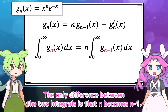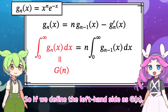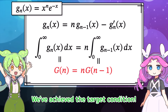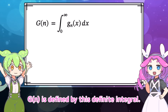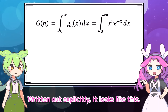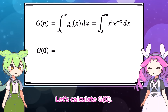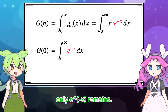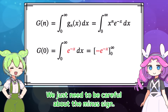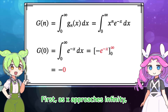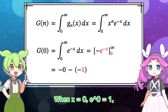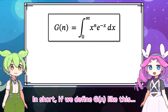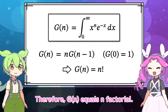Let's integrate both sides from 0 to infinity. The extra term disappears. The only difference between the two integrals is that n becomes n minus 1. So if we define the left-hand side as g of n, then the right-hand side can be written as n times g of n minus 1 — we've achieved the target condition. At last, we've constructed the function g. g of n is defined by this definite integral. Let's also verify g of 0: since x to the 0 equals 1, only e to the minus x remains. Integrating gives 1. So g satisfies the target condition, and therefore g of n equals n factorial.